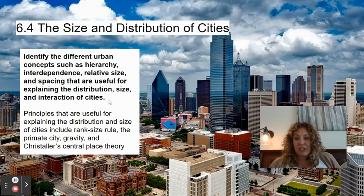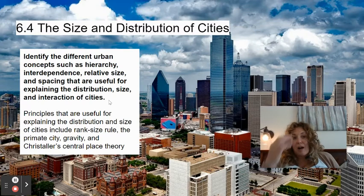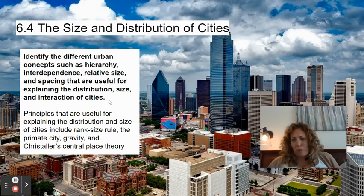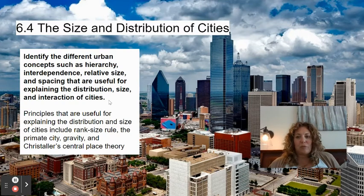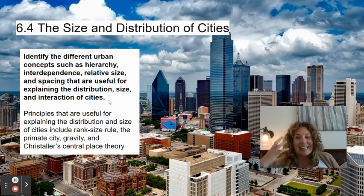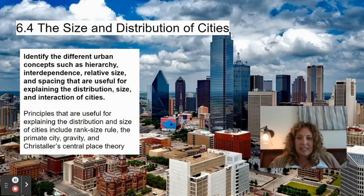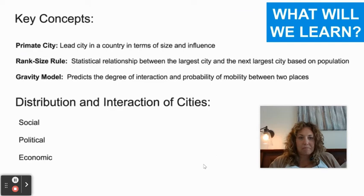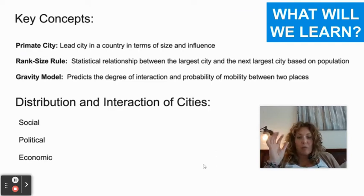These models operate on the idea of a perfect flat world with no interruptions — then real-world conditions affect things. But you can get the idea of the patterns that exist. Key vocab to know: primate city, rank-size rule, and gravity model. The distribution and interactions of cities always have social, political, and economic impacts.